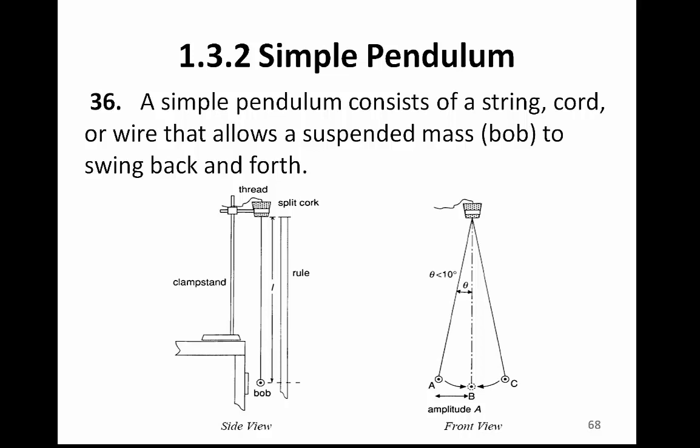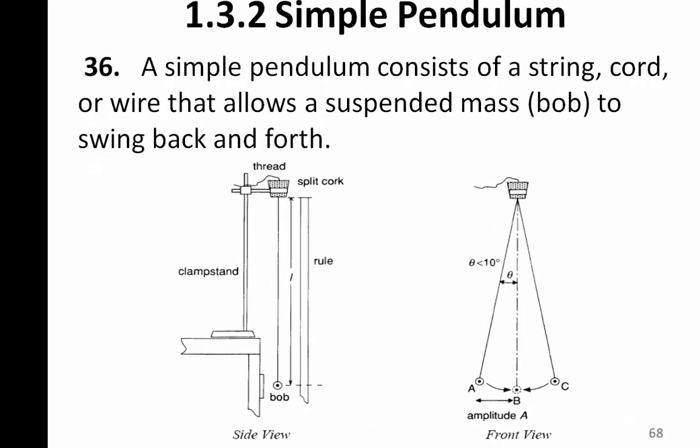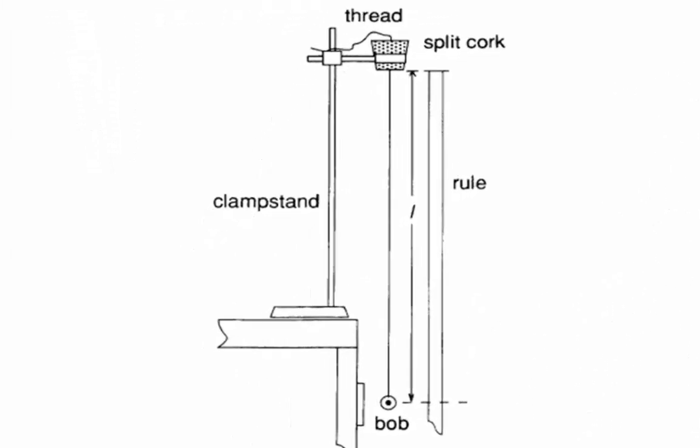A simple pendulum consists of a string, a mass, and a retort stand. The mass or the bob is suspended by a string and it is tied or hanged over a piece of split cork.